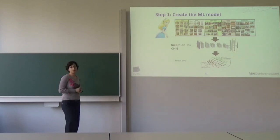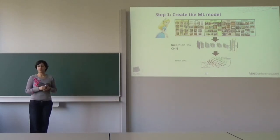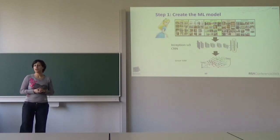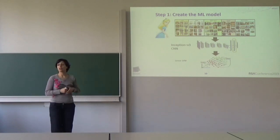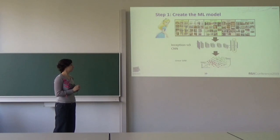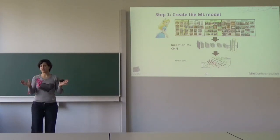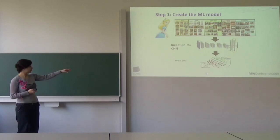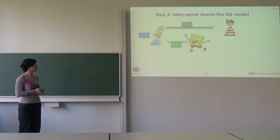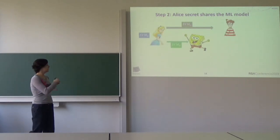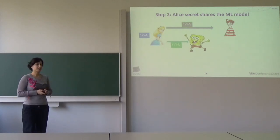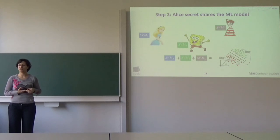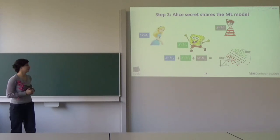We have a party called Alice, who is the classification algorithm provider. She trains the machine learning model first: she uses the CNN classifier's one-but-last layer to extract features, then feeds these features to a linear support vector machine classifier — all happening in the plaintext domain. She then wants to perform classification together with two other parties, Bob and Charlie. She uses an additive secret sharing scheme to share the SVM parameters with the other two parties, and adding together all the shares reconstructs the final SVM.